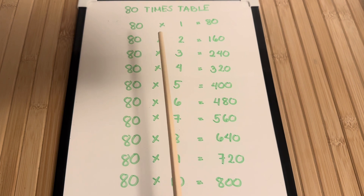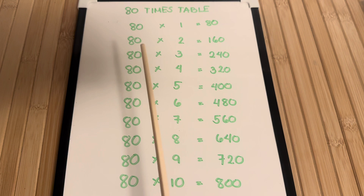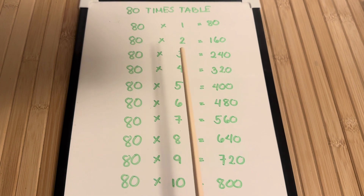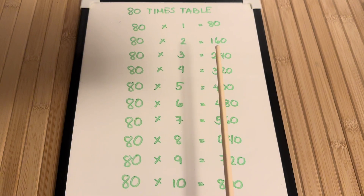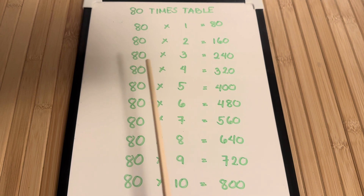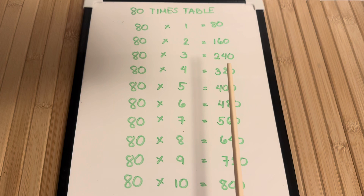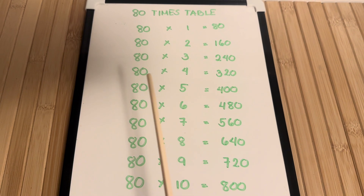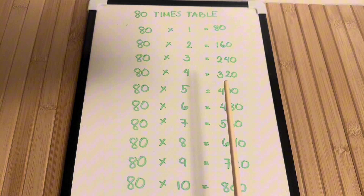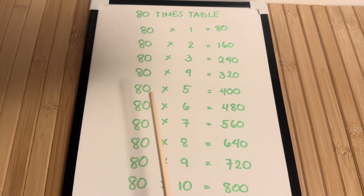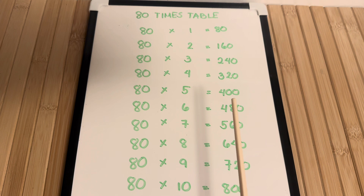80 times 1 is equals to 80. 80 times 2 is equals to 160. 80 times 3 is equals to 240. 80 times 4 is equals to 320. 80 times 5 is equals to 400.